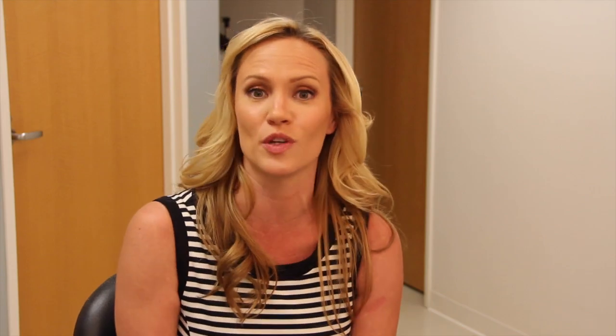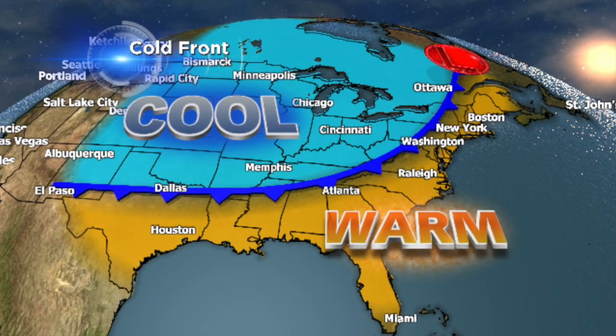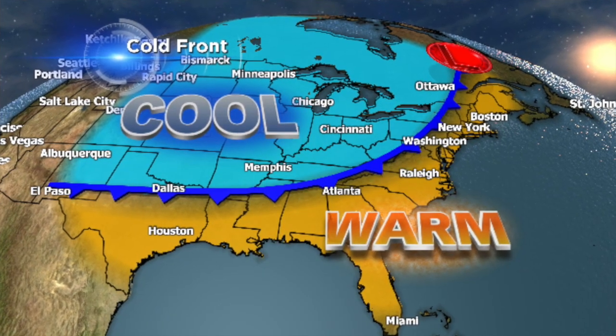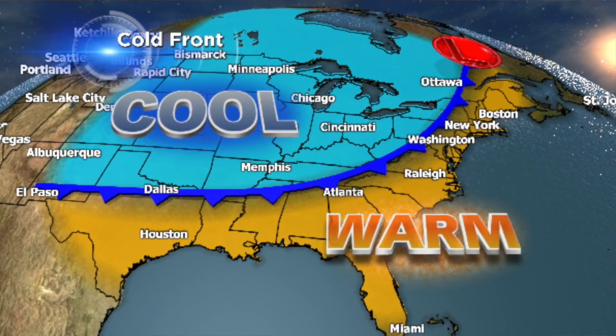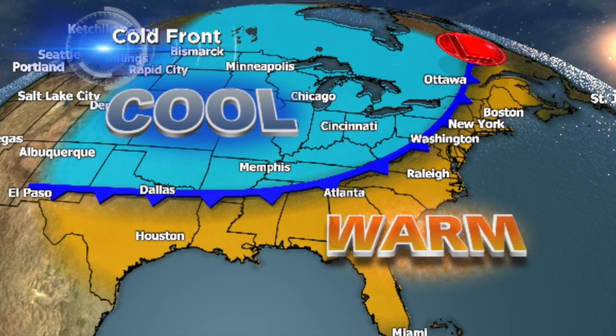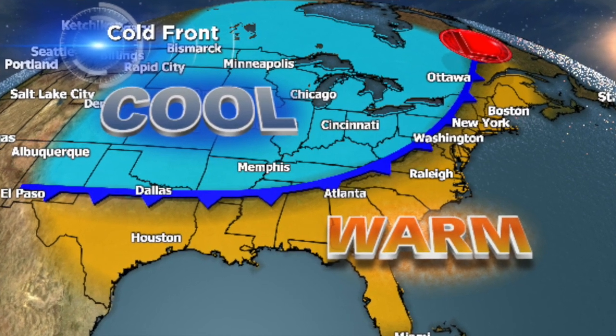Along that transition zone, a lot of times we get showers and we get storms. Now a cold front itself is not the colder air — it's the boundary between those two air masses. And as that colder, drier air starts to move into the warmer air, it causes the warm air to rise.